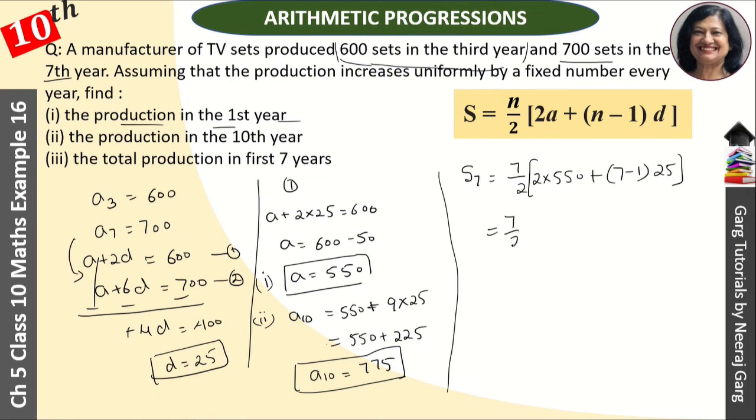So we have 7/2 times [1100 + 6 × 25], which is 1100 + 150 = 1250. Now 7/2 times 1250, the 2 cancels to give 7 × 625, which equals 4375.